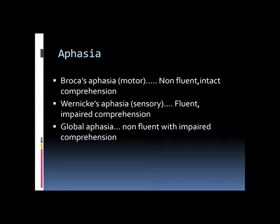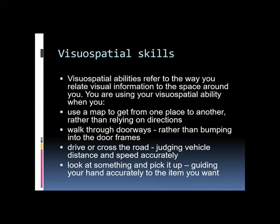Visual-spatial skills refer to the ability to relate visual information to surrounding space — used when reading a map, walking through doorways without bumping, judging vehicle distances while driving, or accurately reaching for an object. These skills are impaired in parietal lobe lesions.